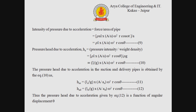The intensity of pressure due to acceleration equals force divided by the area of the pipe. Substituting the force from equation 7 and dividing by pipe area gives pressure intensity as shown in equation number 9. The pressure head due to acceleration equals pressure intensity divided by weight density (ρg), giving equation number 10. The pressure head due to acceleration for the suction and delivery pipes is given by equations 11 and 12 respectively.